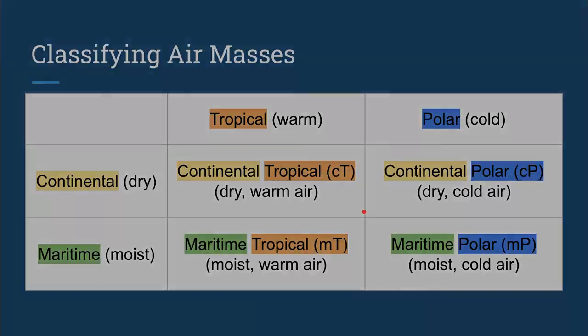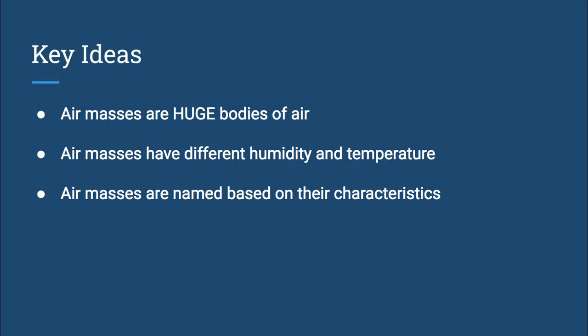Which brings us to our key points. First is that the air surrounding the Earth tends to be part of an air mass. An air mass is a huge body of air. Those air masses on Earth all have different humidity and temperature. And based on the humidity and temperature is how air masses get their names.